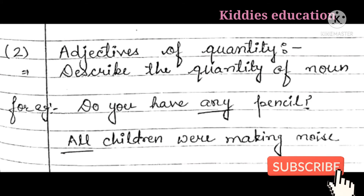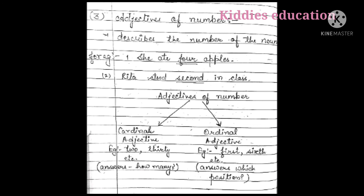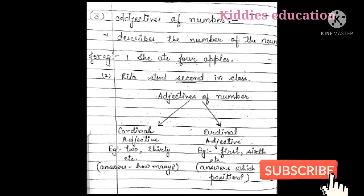The third type is adjectives of number. Adjectives of number describe the number of the noun — that is, they tell how many or what number is present. For example: 'She ate four apples' — four tells how many apples.